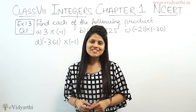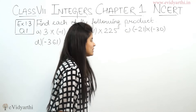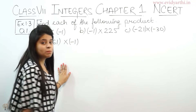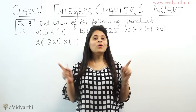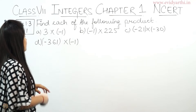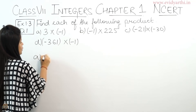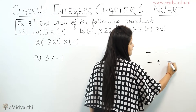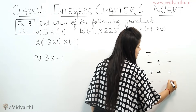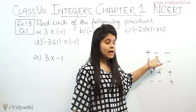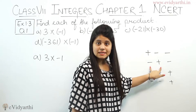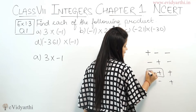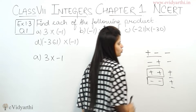Hello guys, this is Manji from Evidyati.in and we are starting with Question 1, Exercise 1.3 — find each of the following products, which means you have to multiply. You need to remember the sign properties: plus × minus = minus, minus × minus = plus, plus × plus = plus. When both signs are the same the result is positive, and when both signs are different the result is negative.